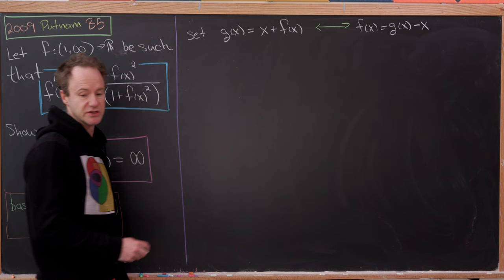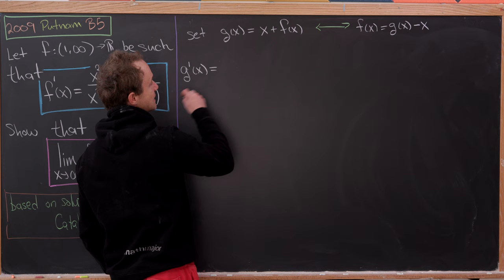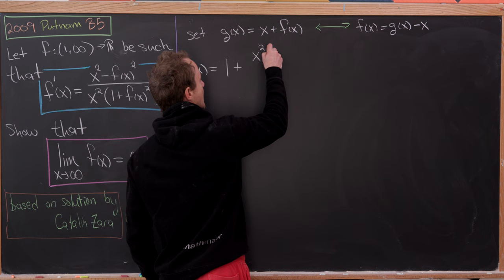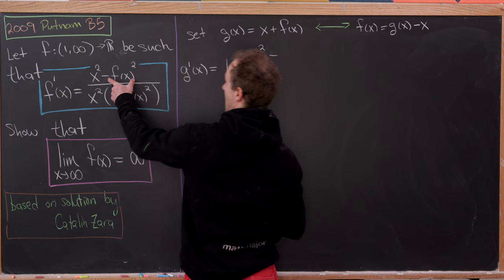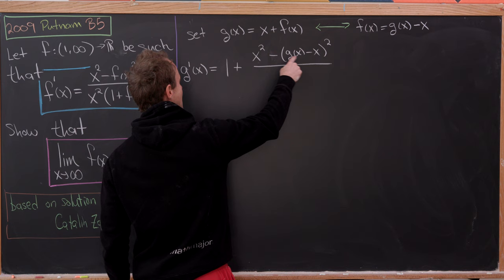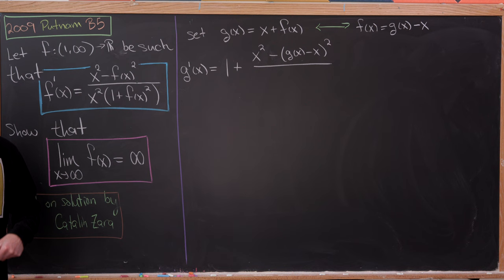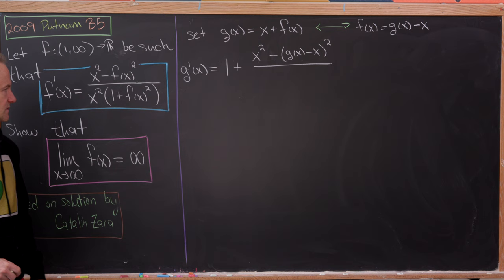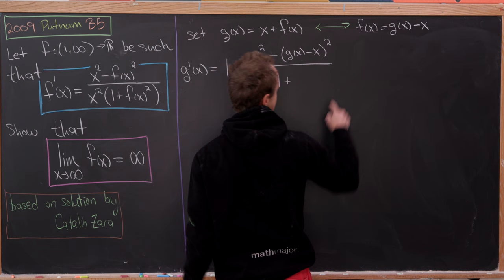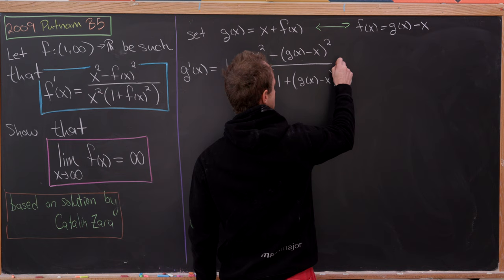Notice that g prime of x equals 1 plus f prime of x. Substituting the expression for f prime and replacing f(x) with g(x) − x, the numerator becomes x squared minus (g(x) − x) squared. The denominator becomes x squared times (1 + (g(x) − x) squared). So we've written the differential equation for g completely in terms of g.